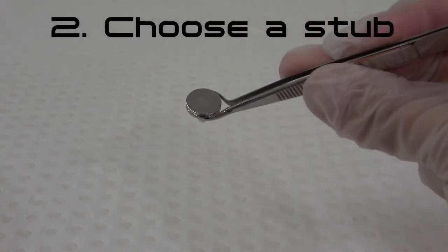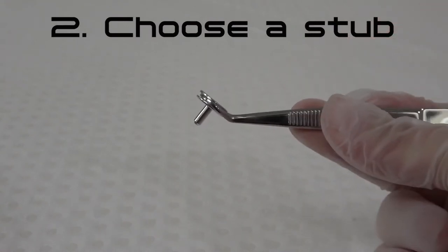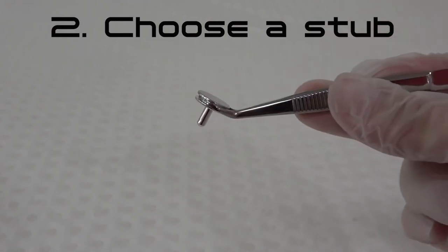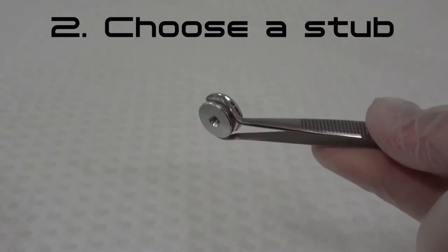Step 2: Choose a stub compatible with the SEM you will be using. Small SEM stubs available through the UNSW EMU currently include 12.6 mm pin stubs and 15 mm screw thread base stubs.